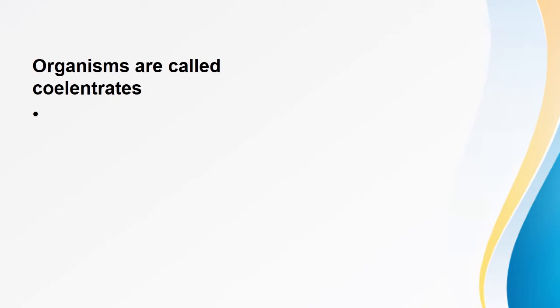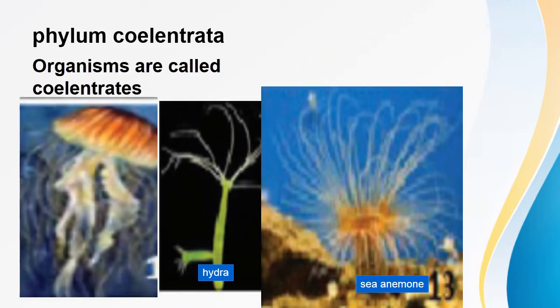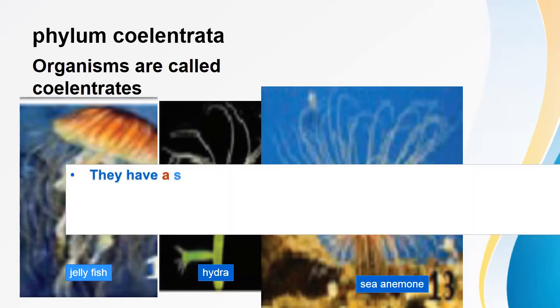Phylum Coelenterata — organisms in this phylum are called coelenterates. Examples include sea anemone, hydra, and jellyfish. Characteristics of Phylum Coelenterata: organisms have a single body opening. They possess specialist cells for stinging and defense or capturing their prey. They have a ring of tentacles for capturing prey.